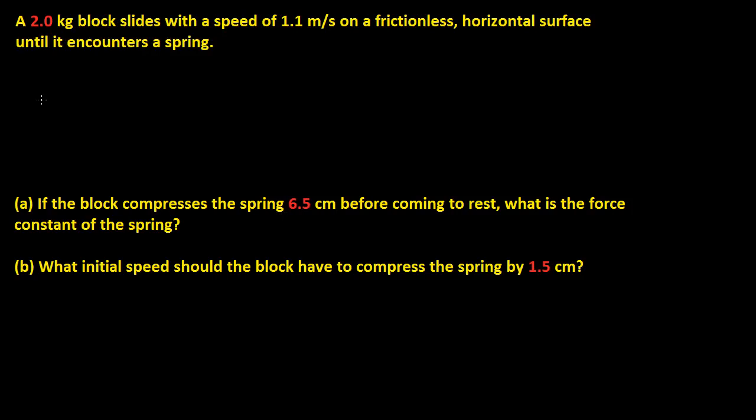Let's draw a diagram real quick. So we have a little block and it's going at a constant speed of 1.1 meters per second on a frictionless horizontal surface until it encounters a spring. So we have our spring, and then this is connected to some sort of wall. Let's make this a flat surface so that it can be compressed.